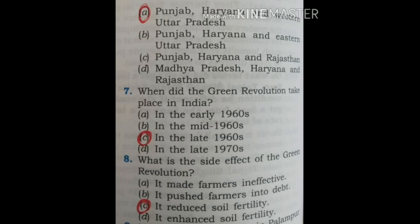Question 7: When did the Green Revolution take place in India? The options are: in the early 1960s, in the mid 1960s, in the late 1960s, in the late 1970s. The correct option is C — in the late 1960s.